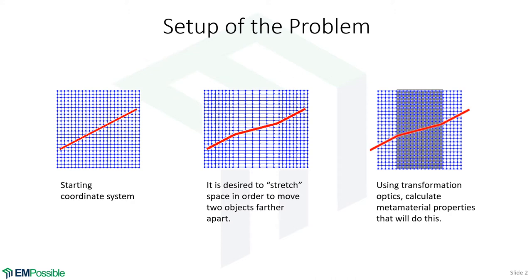Here's the setup for the problem. We have a starting coordinate system and we're defining the direction of a wave or field line. We would like to, in the middle of that, somehow stretch space.